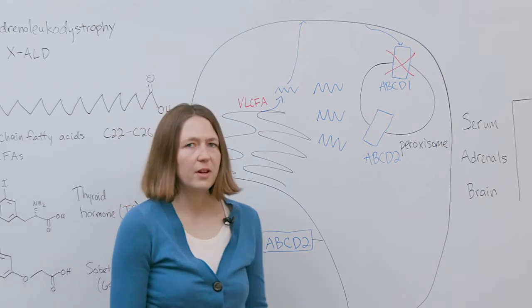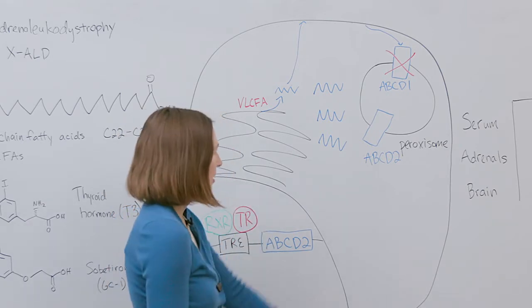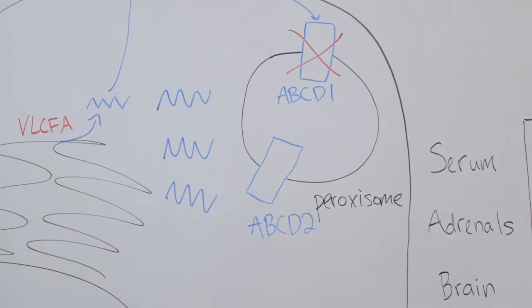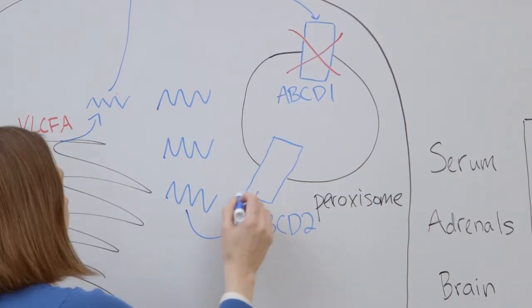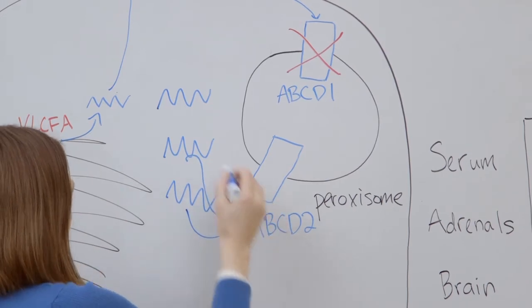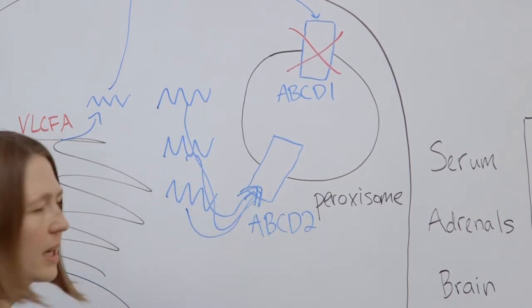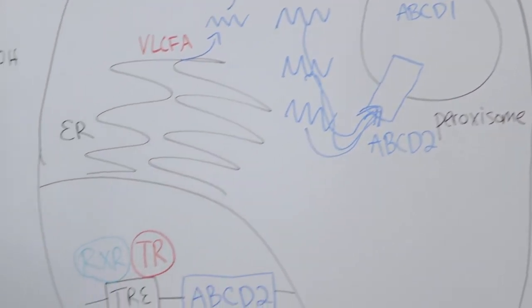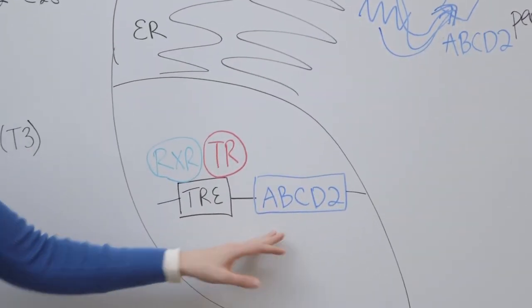An attractive therapeutic strategy for XALD involves a second transporter ABCD2. Studies have shown that upregulation of ABCD2 can lead to increased transport and degradation of the VLCFAs. Also ABCD2 is positively regulated by thyroid hormone.